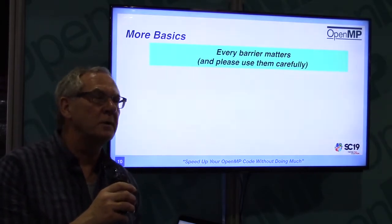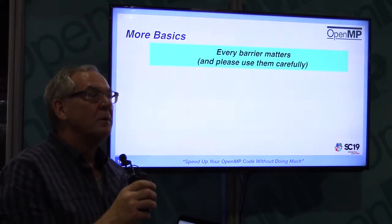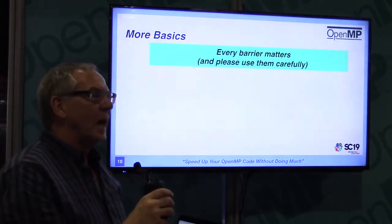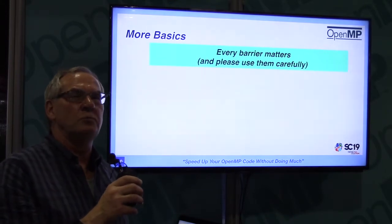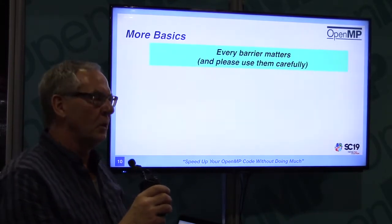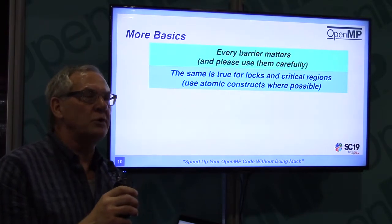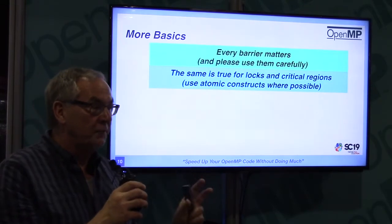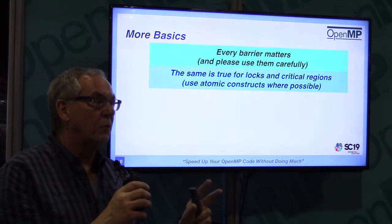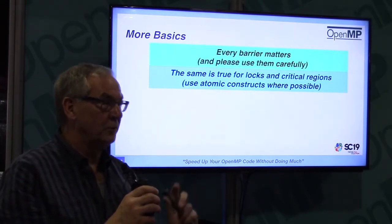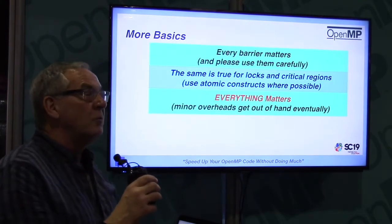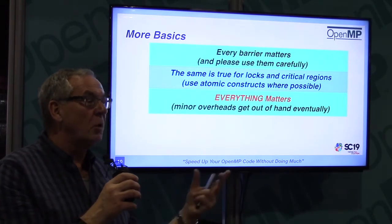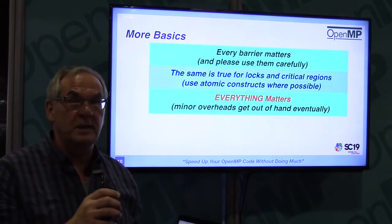Barriers are important — you need them for correctness, but use them with care. Don't sprinkle them all over your code just in case. The same is true for locks and critical regions: they are expensive. You need them for correctness, but be careful when and how often to use them. When you go for scalability, Amdahl's law means even the small things do matter.